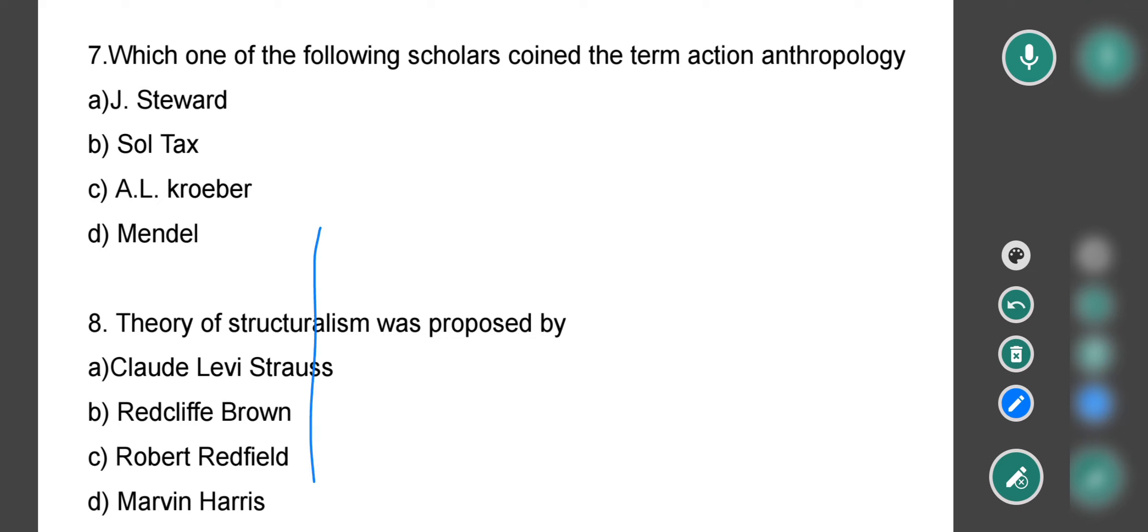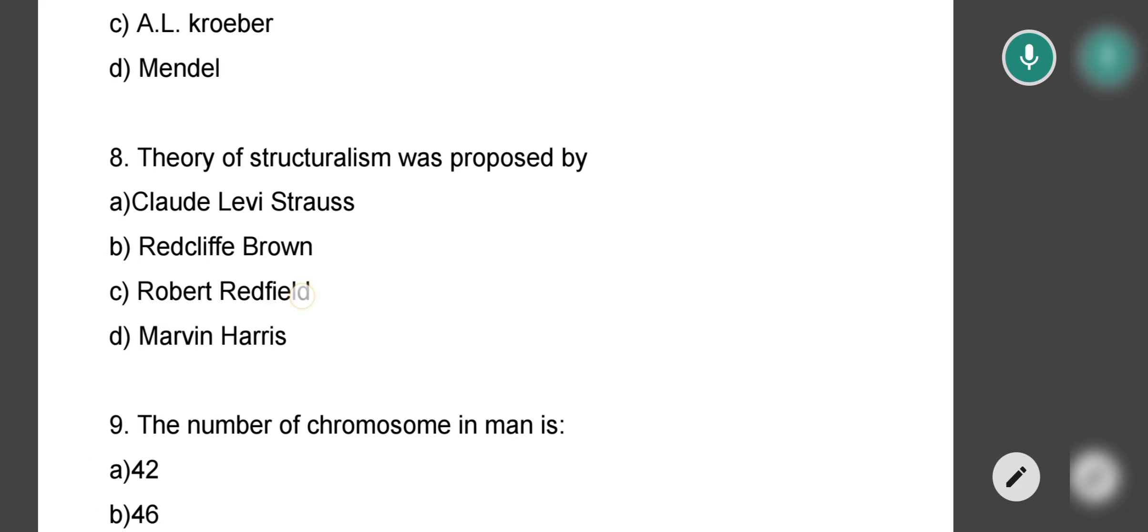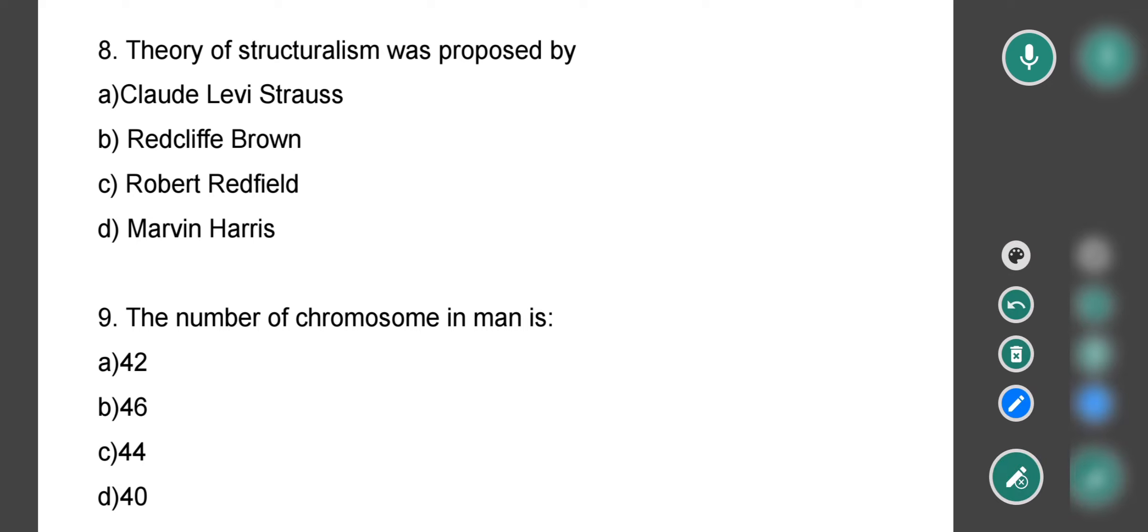Question number eight: Theory of structuralism was proposed by? Who proposed the theory of structuralism? Options are Claude Lévi-Strauss, Radcliffe-Brown, Robert Redfield, and Marvin Harris. The correct option is option A, that is Claude Lévi-Strauss. Lévi-Strauss's famous concept is structuralism.